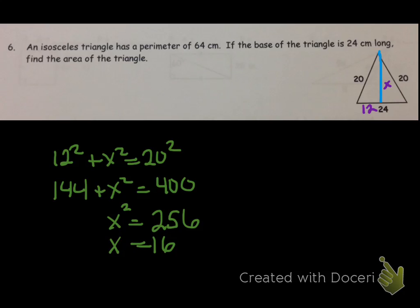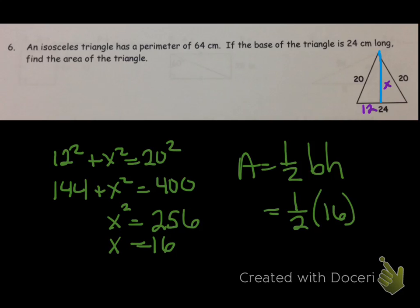Now we're just going to multiply: it's 1/2 base times height, so that's 1/2 times 16 times 24, and that gives us 192 centimeters squared.